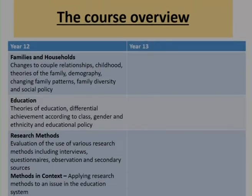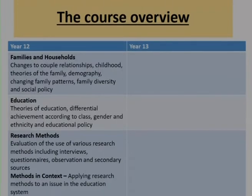The third main topic in year 12 is research methods. In order to understand the world we live in, sociologists need to go out and complete research, so we learn what methods they use and we evaluate them — things such as interviews, questionnaires, observations and secondary data. There's also a mini topic called methods in context, which allows you to apply your knowledge of research methods to an issue in the education system, merging together two of the big topics.